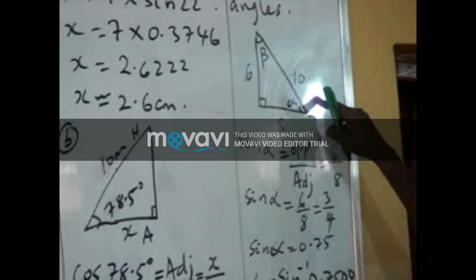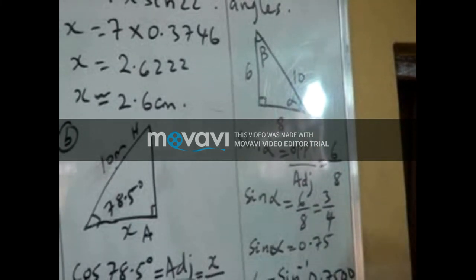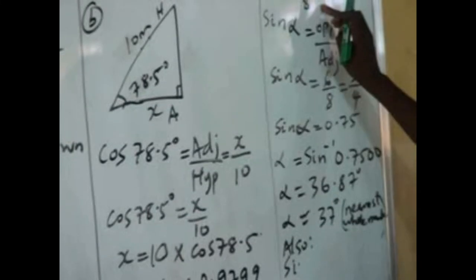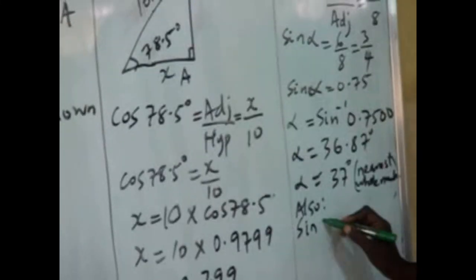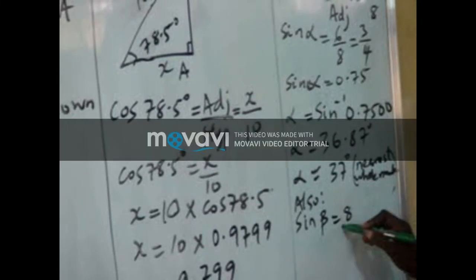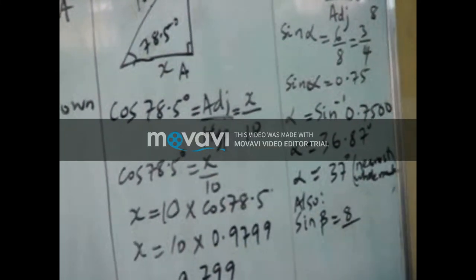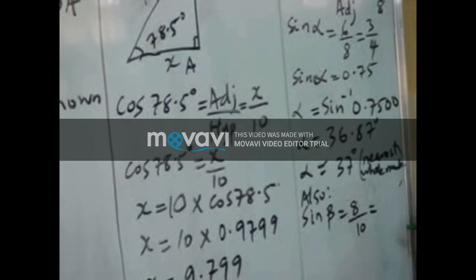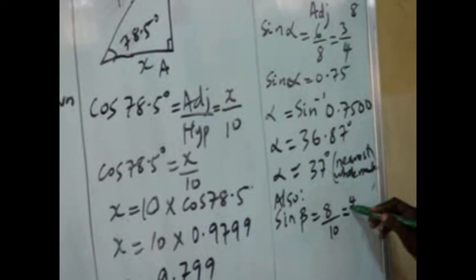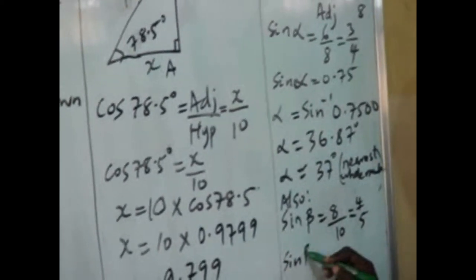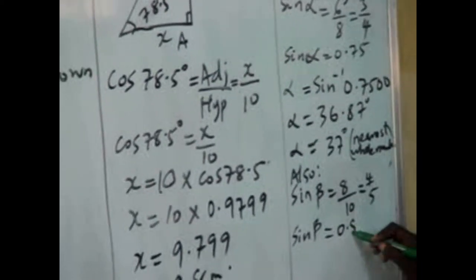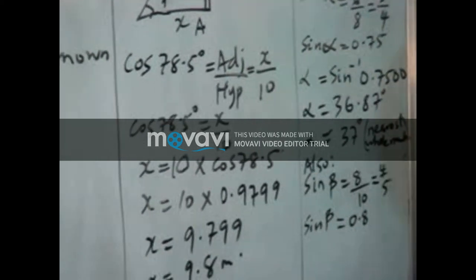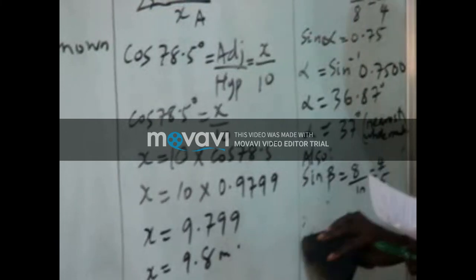I want to use O and H. O and H from SOHCAHTOA is sine. So we have our sine beta equals O over H, which is 8 over 10, which is 4 over 5. We will reduce it to the lowest form, 4 over 5. You can go for that, 0.8. But don't forget, as I said, let's go to the table.